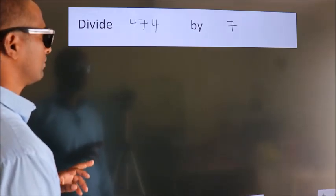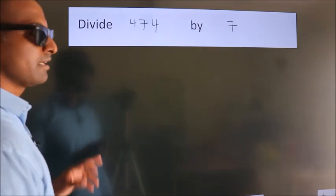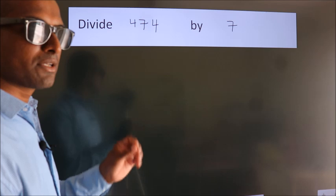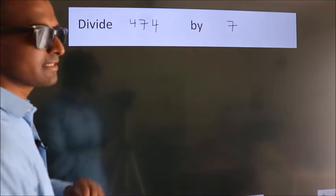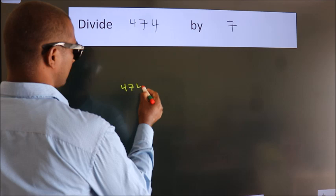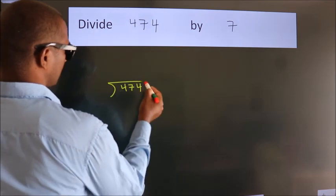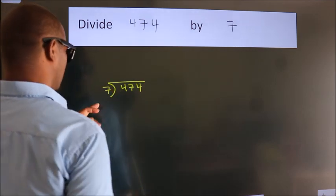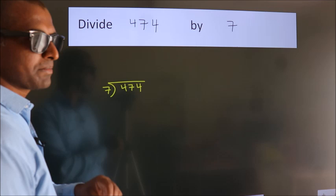Divide 474 by 7. To do this division, we should frame it in this way. 474 here, 7 here. This is your step 1.